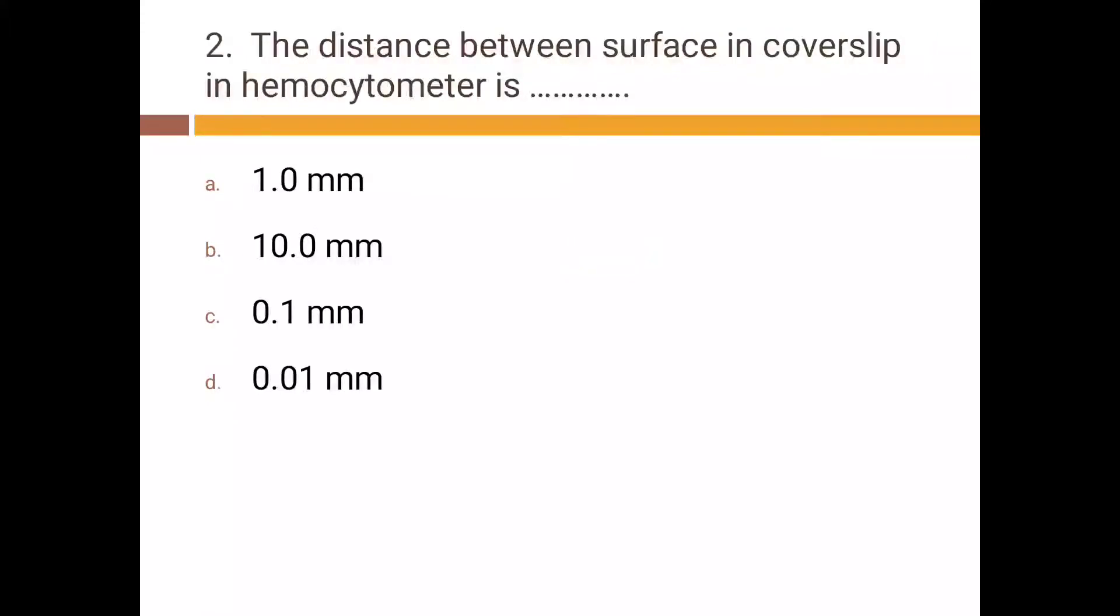The distance between surface and coverslip in a hemocytometer is: a) 1.0 mm, b) 10.0 mm, c) 0.1 mm, d) 0.01 mm. Correct answer is c) 0.1 mm.